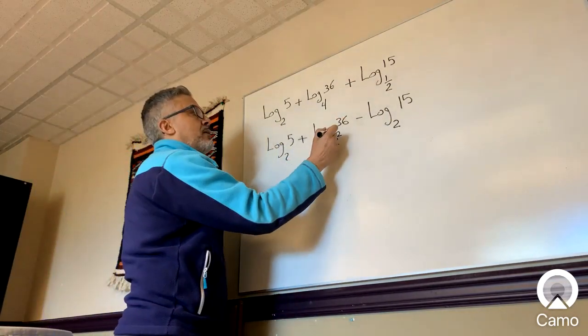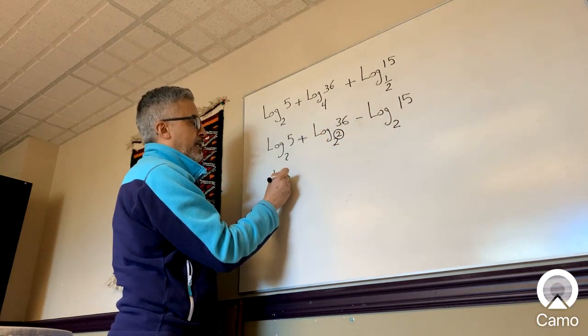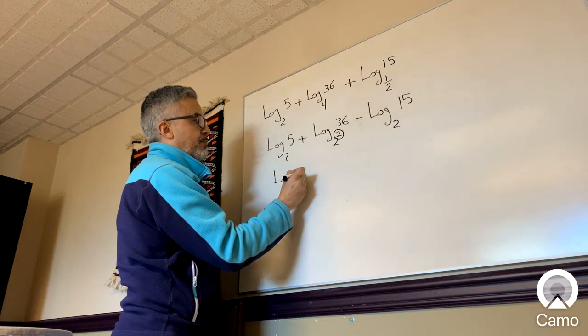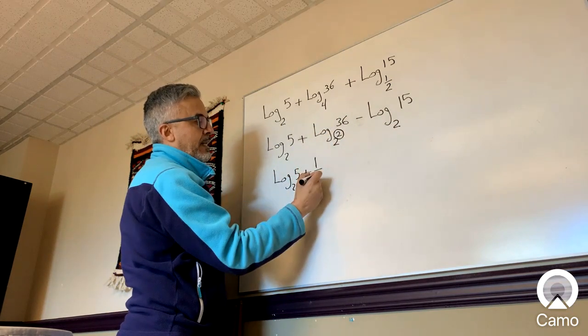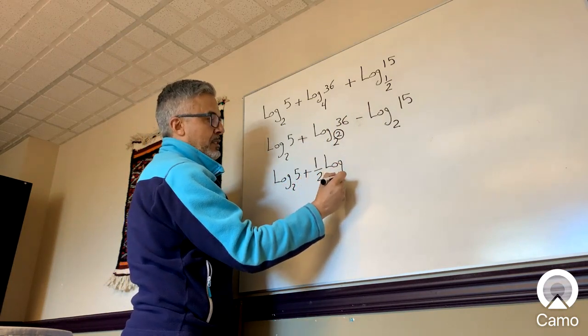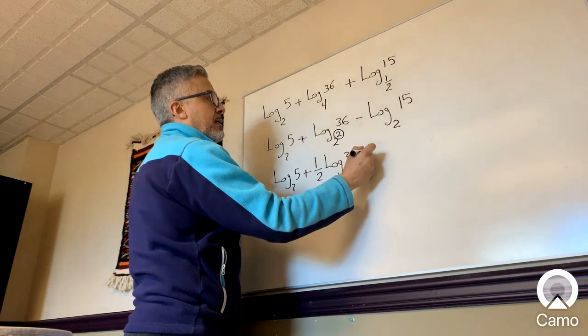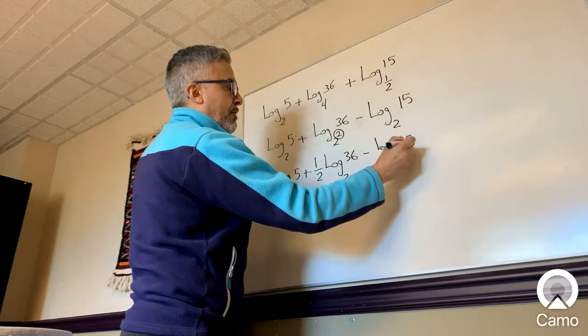How about here? You see this exponent right here? Let me just rewrite this. This exponent here, I just go 1 over that exponent, which becomes 1/2 log base 2 of 36 minus log base 2 of 15.